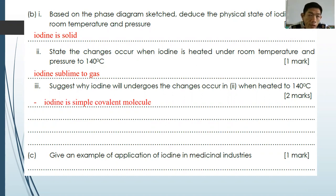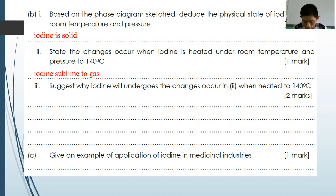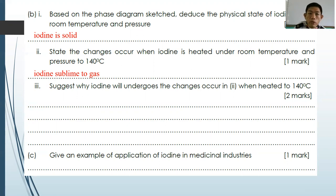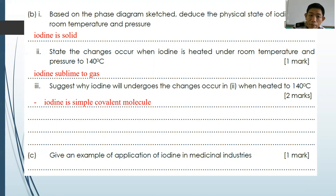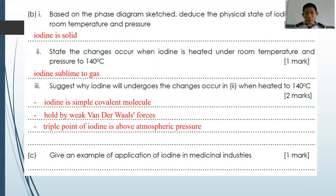Explain why iodine easily vaporizes. Iodine is a simple covalent molecule held by weak Van der Waals forces. Because it is a simple covalent molecule with weak Van der Waals forces, the intermolecular forces are relatively weak. That is why it can sublime easily under atmospheric pressure. The triple point of iodine is above atmospheric pressure, so it will sublime under atmospheric pressure.